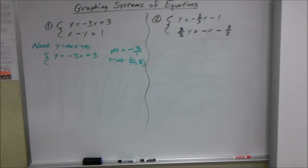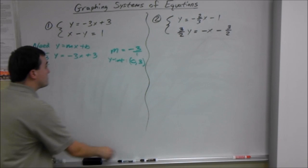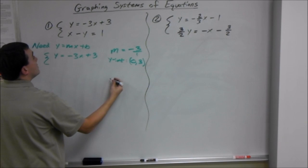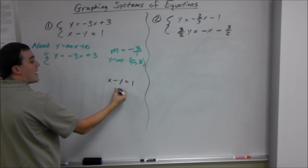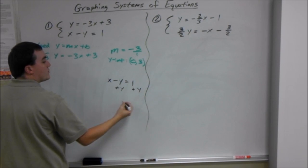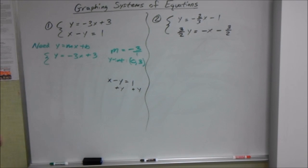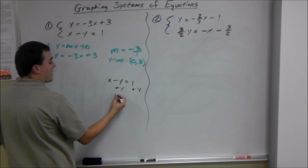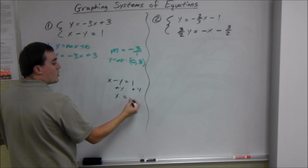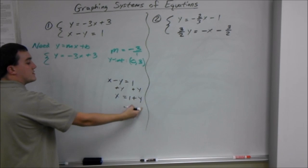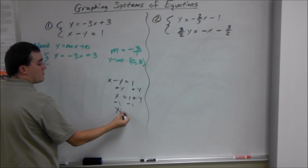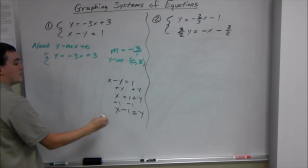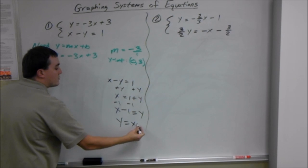The second one we have to do a little bit of work for. We're just solving for y. So what we could do, and I'll do it over here to the side, we have x minus y equals 1. We could add y to both sides. We're just trying to get y by itself. I did that to make y positive. It's easier to deal with when y is positive. x equals y plus 1, or 1 plus y, however you want to look at it. And then since we need y by itself, we minus 1. So x minus 1 equals y. You can flip that around, y equals x minus 1.